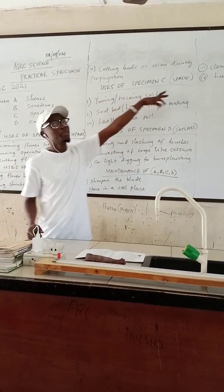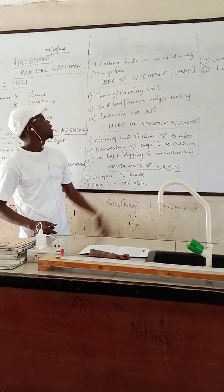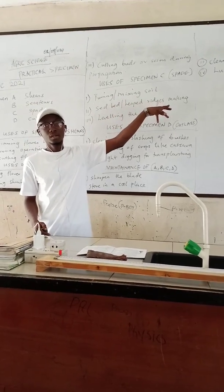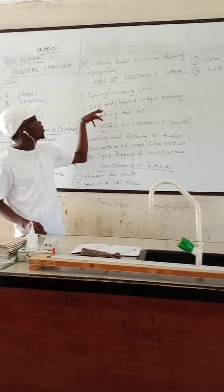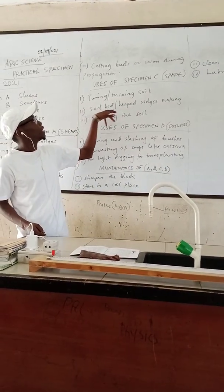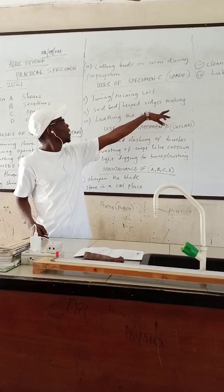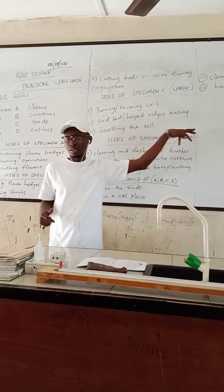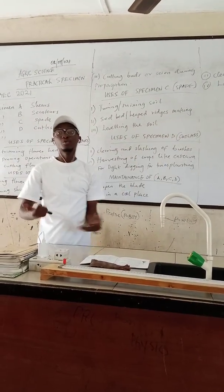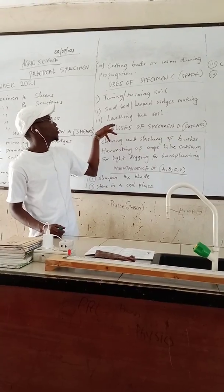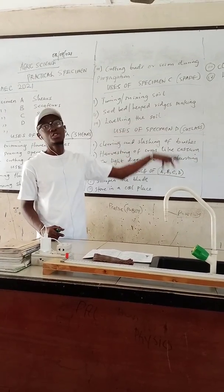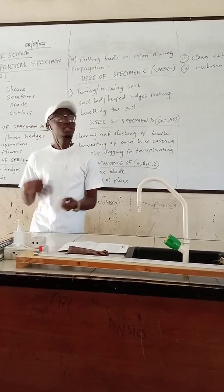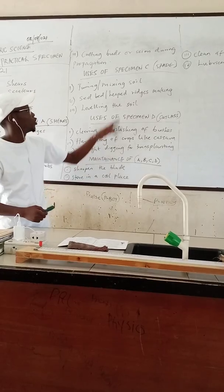Specimen C is the spade, which is big and we use it for turning and mixing the soil. We also use it to make ridges when we don't have a hoe. We also use it for leveling the soil.